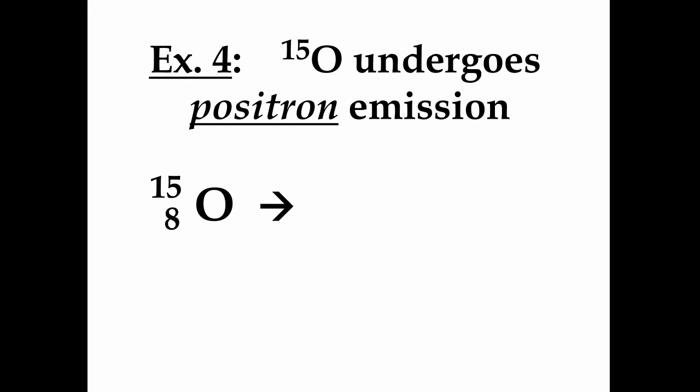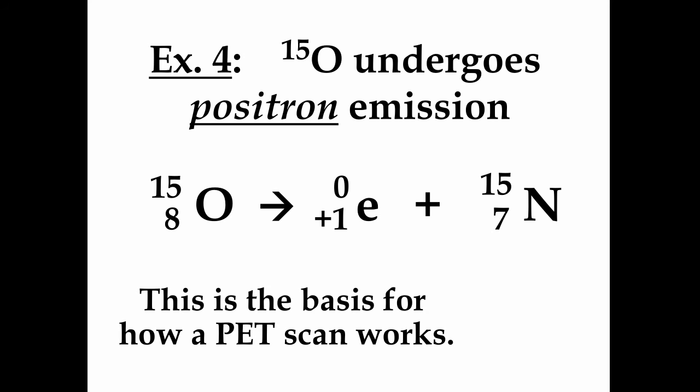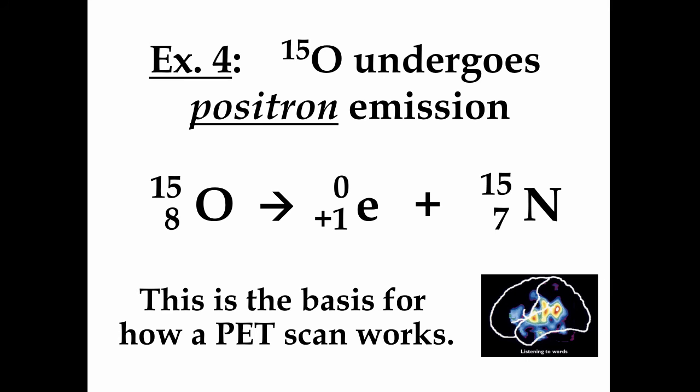How do we write a positron emission equation? We start with the parent, oxygen-15. It emits not a negatively charged electron, but a positively charged electron. That means the remaining substance must have a charge of 7 (7 plus 1 equals 8), a mass of 15 (15 plus 0 equals 15), and that is a nitrogen-15 nucleus. And just as an interesting side note, this is the basis for how a PET scan works. PET stands for positron emission tomography, and PET scans tell us something about what's going on inside the body.